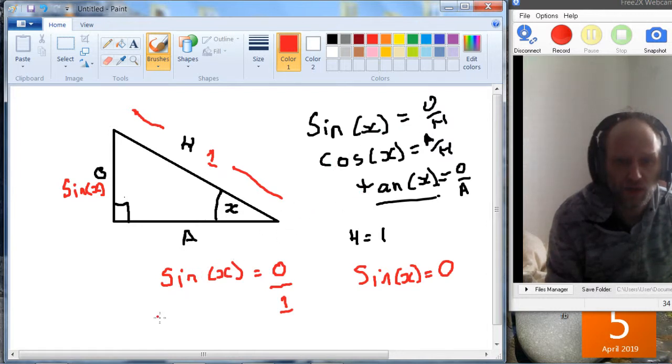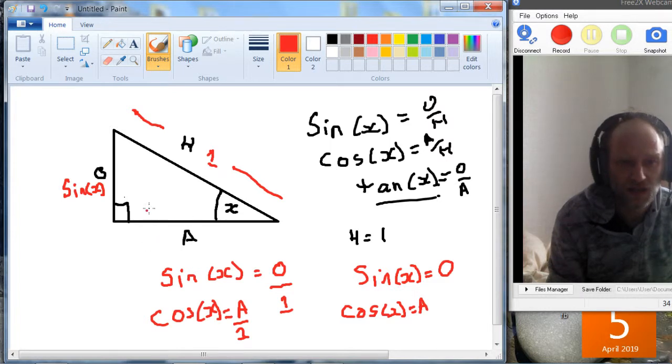And we can do the same for cos. Cos x is the adjacent over the hypotenuse, and if the hypotenuse is 1, we just get cos x is equal to the adjacent. So this is cos x.